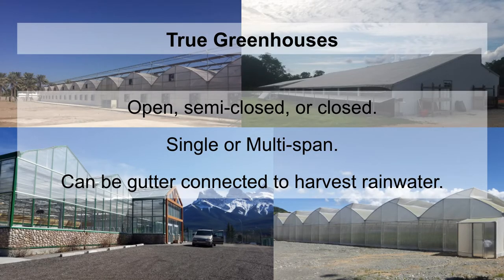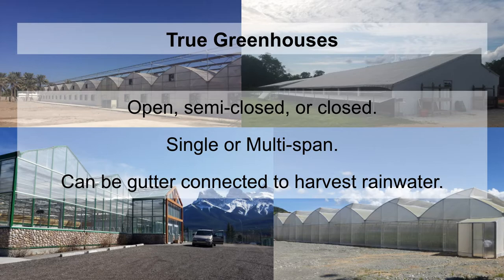True greenhouses can be open, semi-closed, or closed. Open to the outside air, semi-closed which means controlled through vents and open some of the time, or closed so that they are entirely sealed and all of the air that goes in and out goes through an engineered HVAC system. Greenhouses can also be single-span or multi-span. Multi-span means greenhouse modules attached right next to each other, sharing walls and creating a large open space that can increase efficiency at scale. Greenhouses can be gutter connected to harvest rainwater that falls on the roof as well.